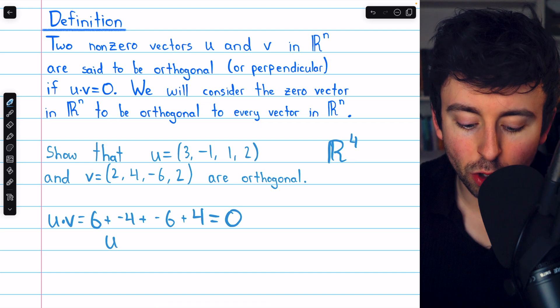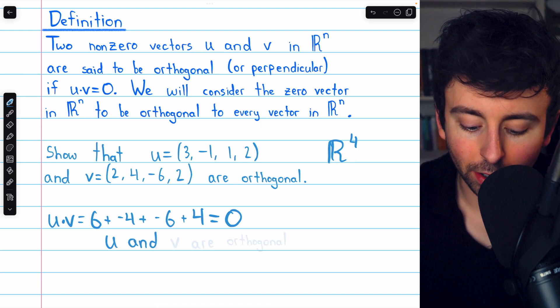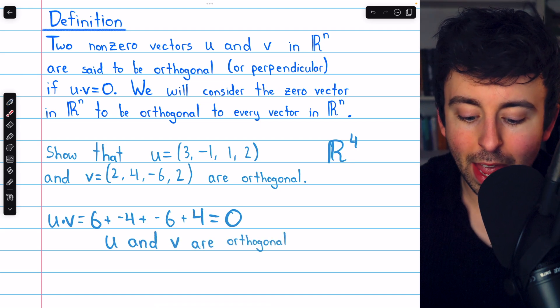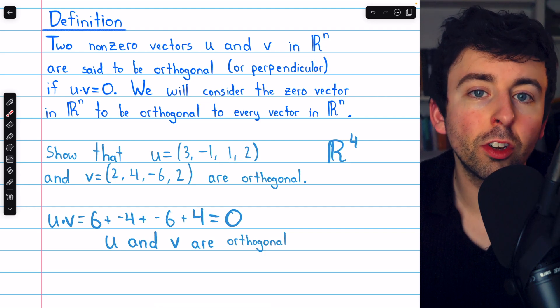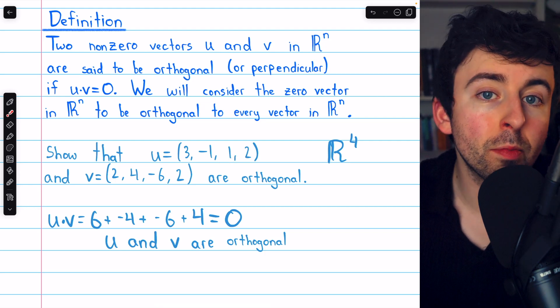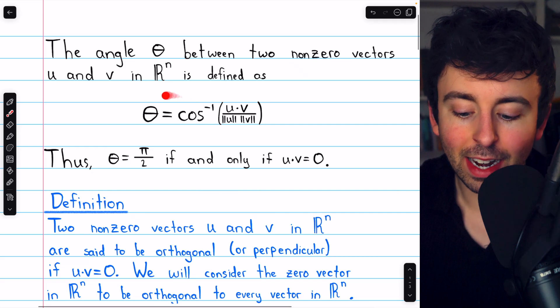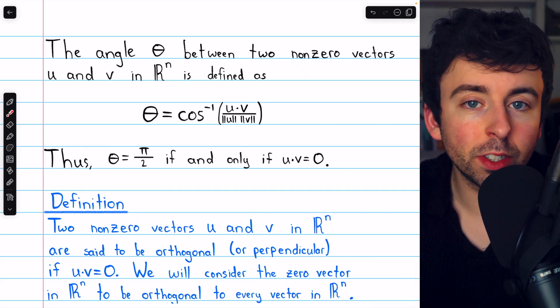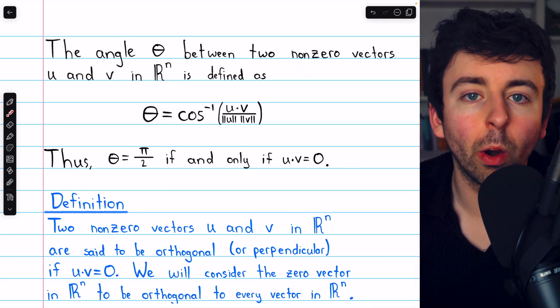Hence, by definition, u and v are orthogonal. So that's how easy it is. If we have two non-zero vectors, just take their dot product. If the dot product is 0, the angle between them necessarily would be pi over 2. And so we say the vectors are orthogonal.